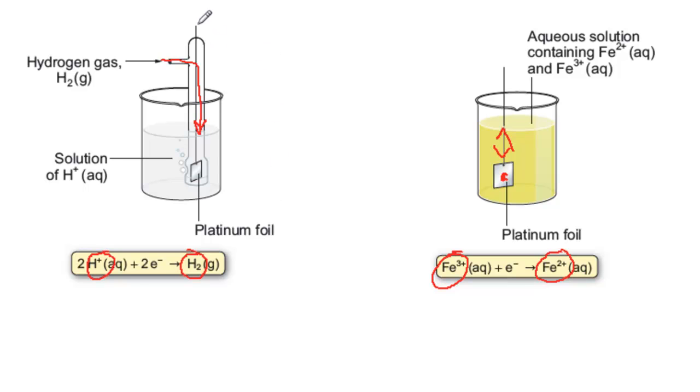We could connect these two half cells together using a wire, and we could include a high resistance voltmeter if we wanted to measure the potential of the cell. Of course, we'd also need a salt bridge. And now we have a cell.